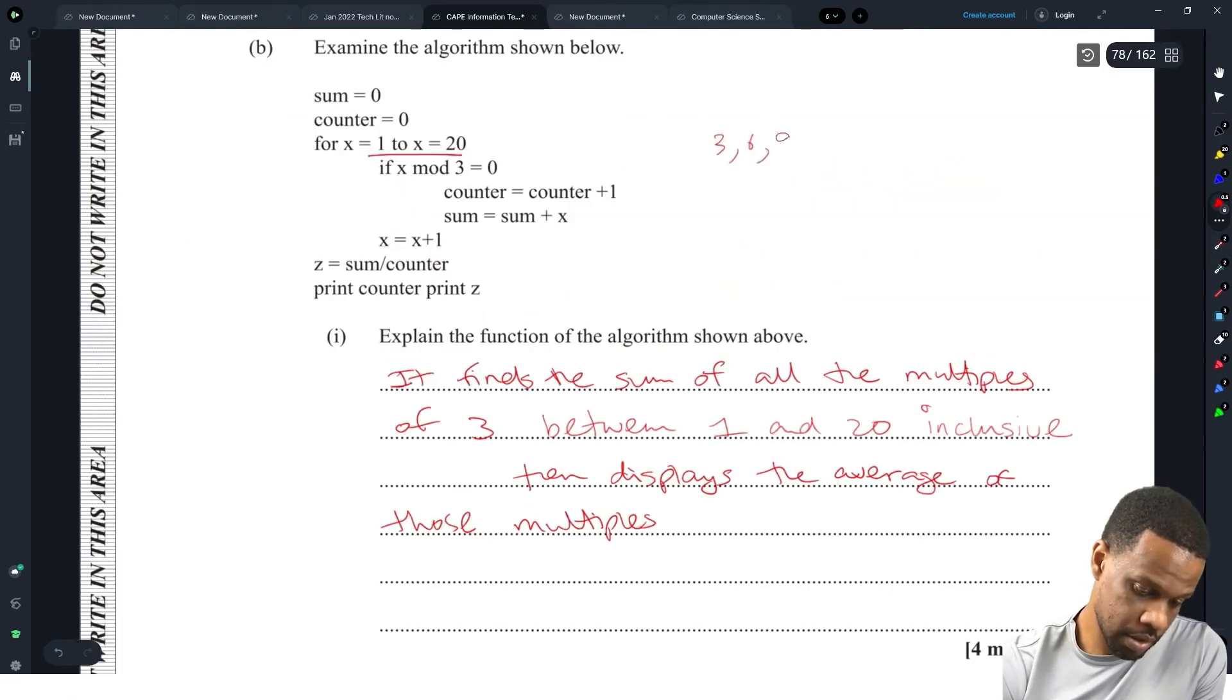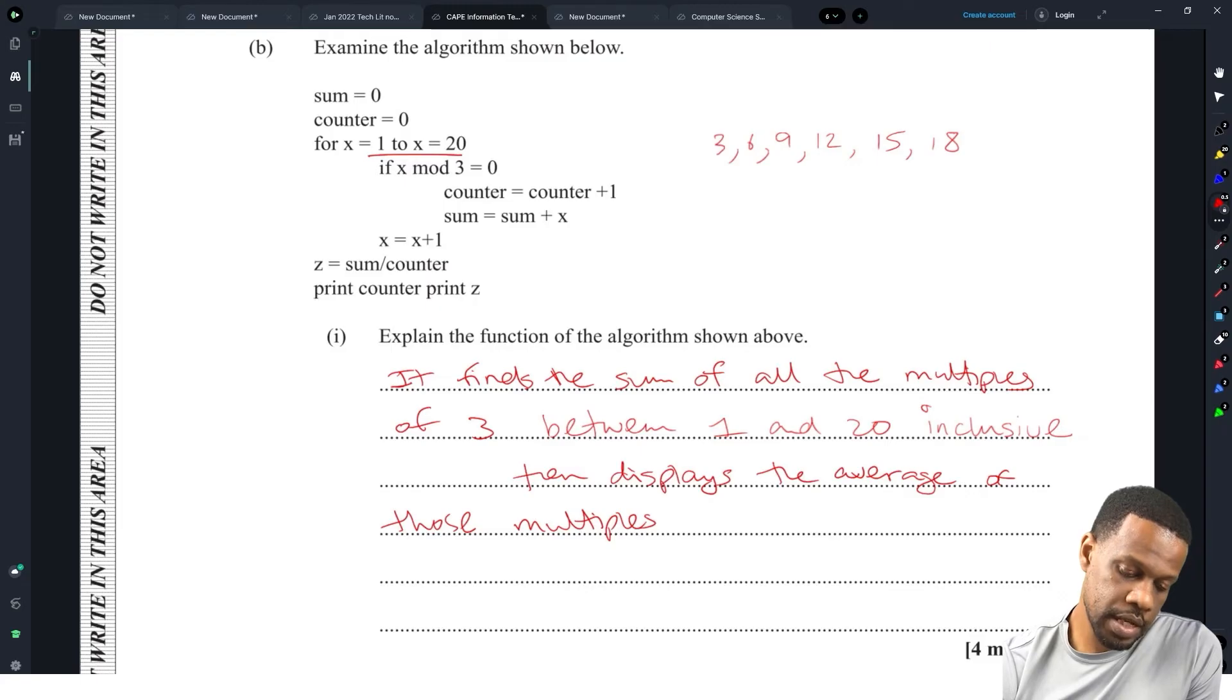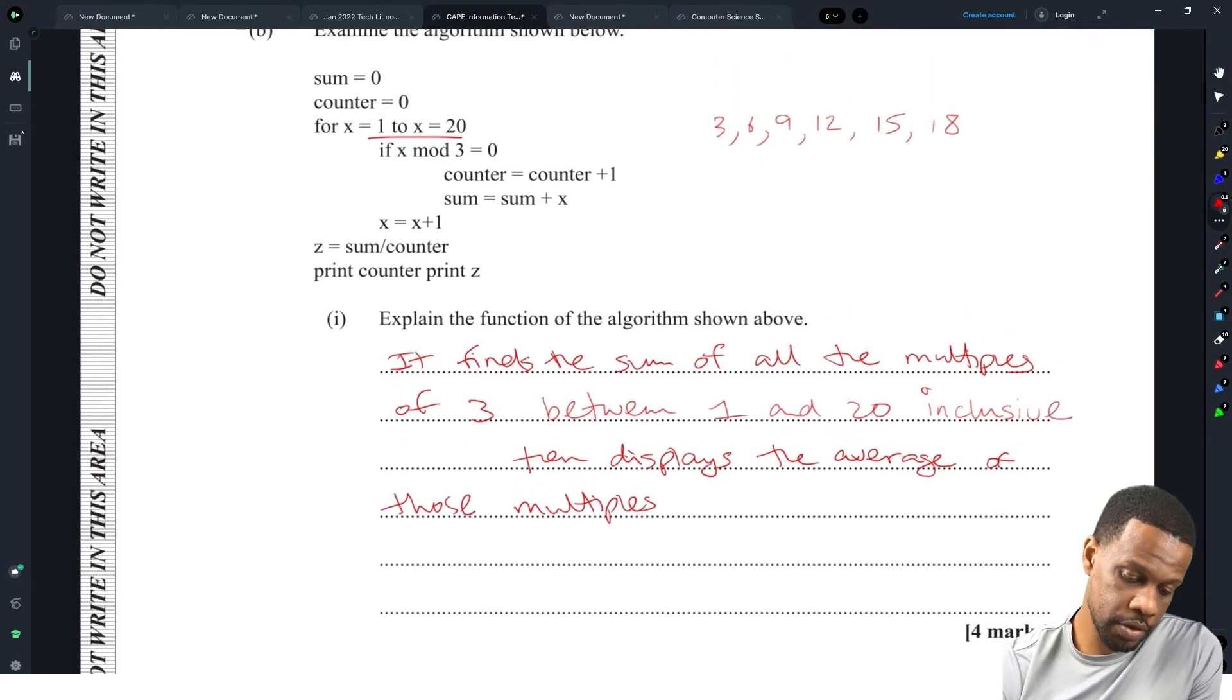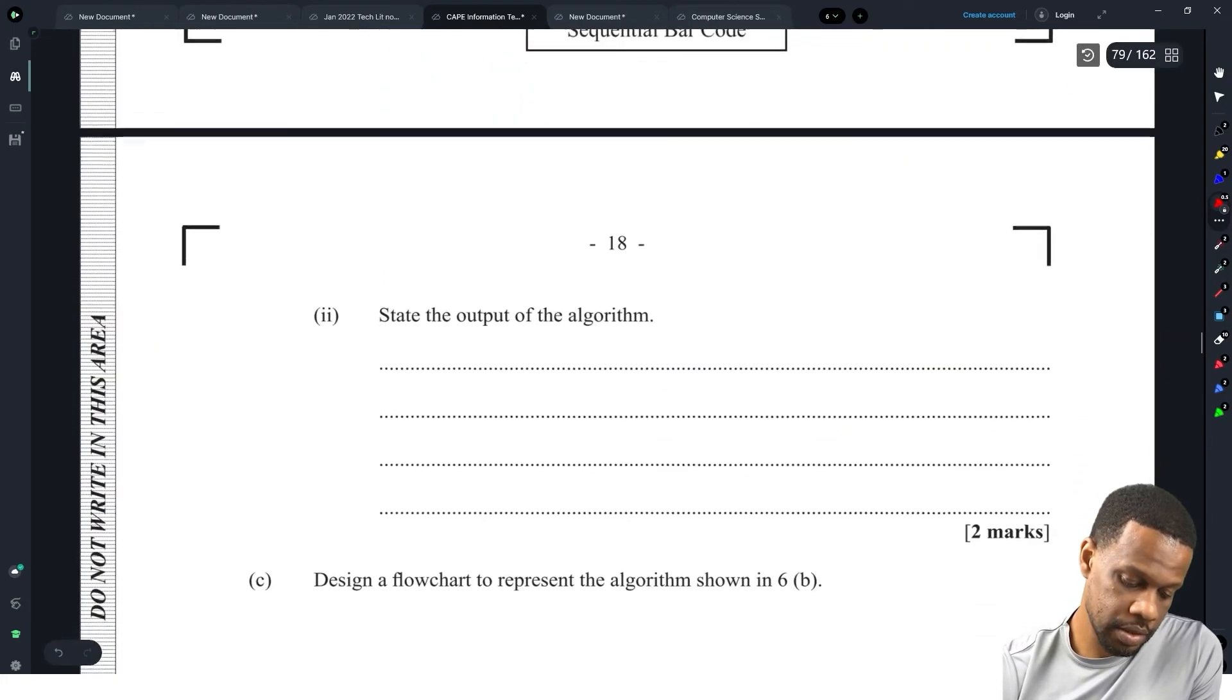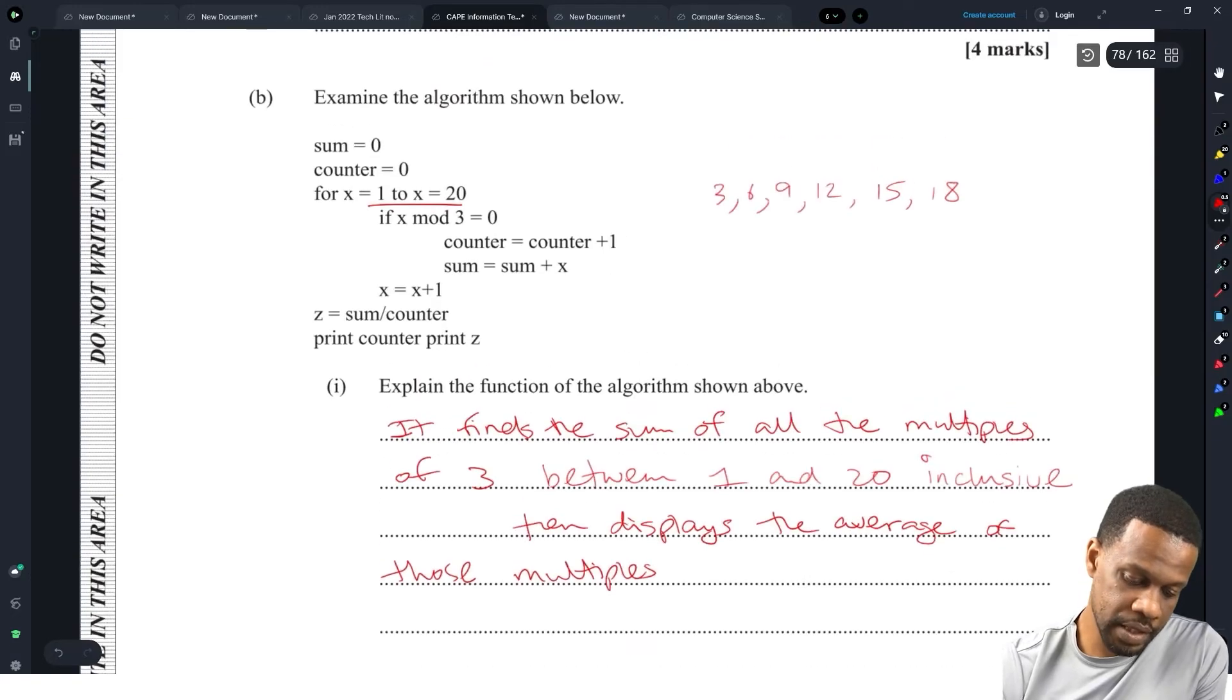State the output of the algorithm: three, six, nine, twelve, fifteen, eighteen. Six and three is nine, nine and nine is eighteen, eighteen and twelve will be thirty, thirty and fifteen will be forty-five, forty-five plus eighteen is sixty-three.